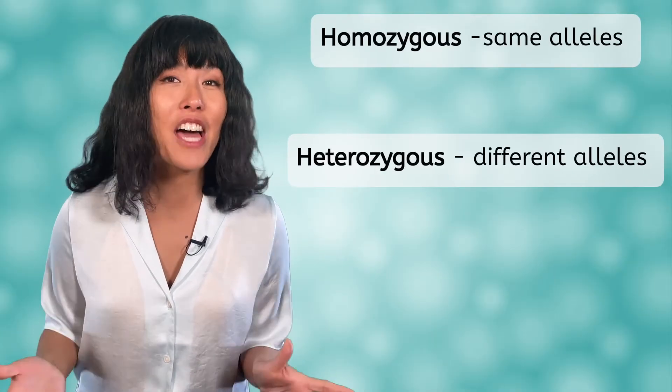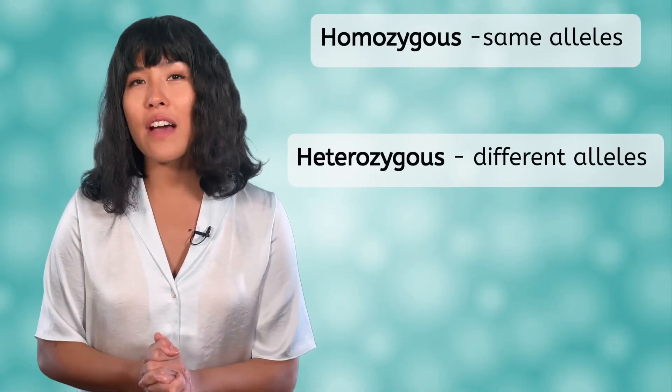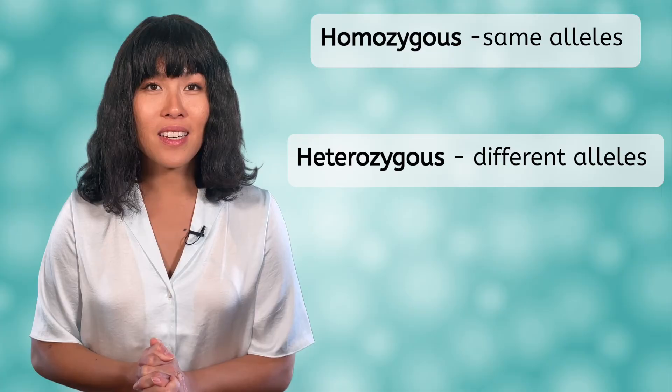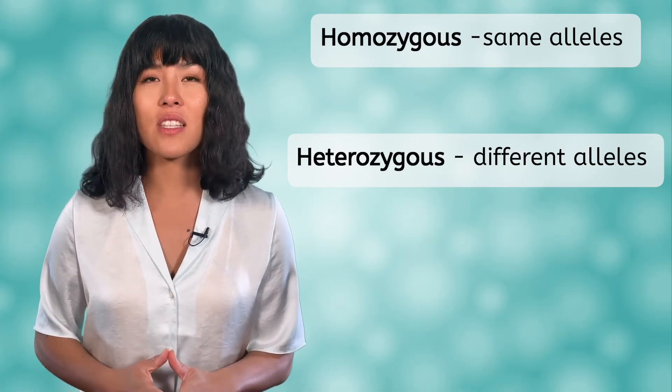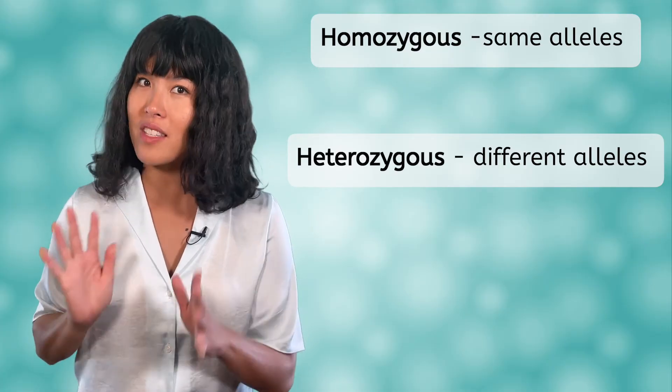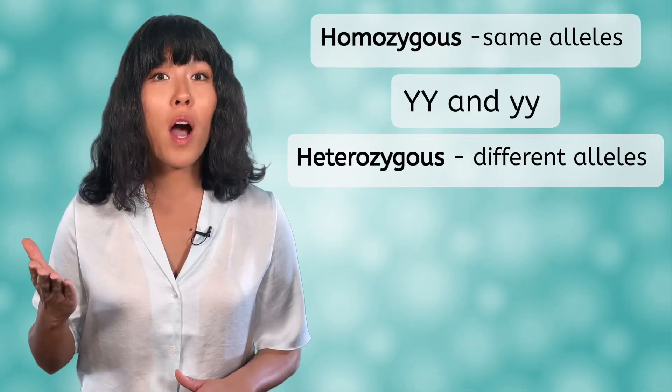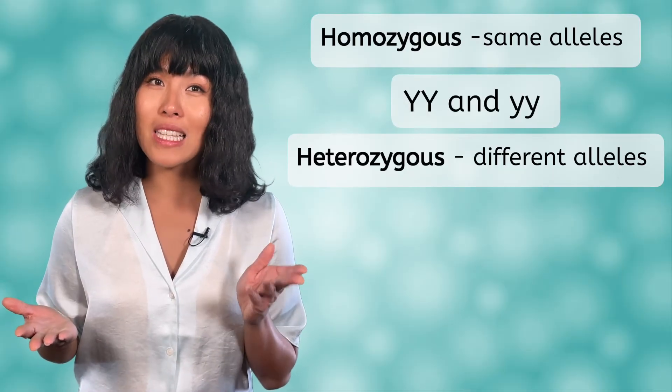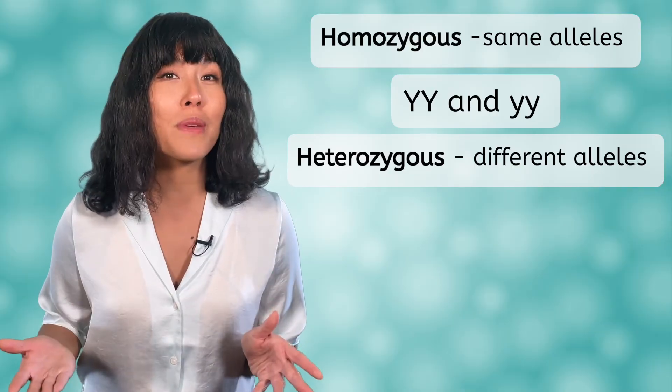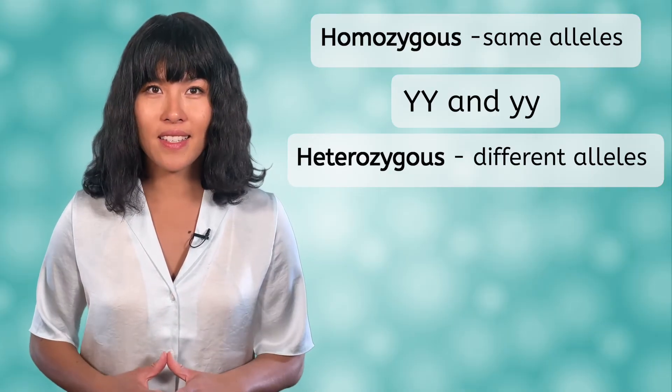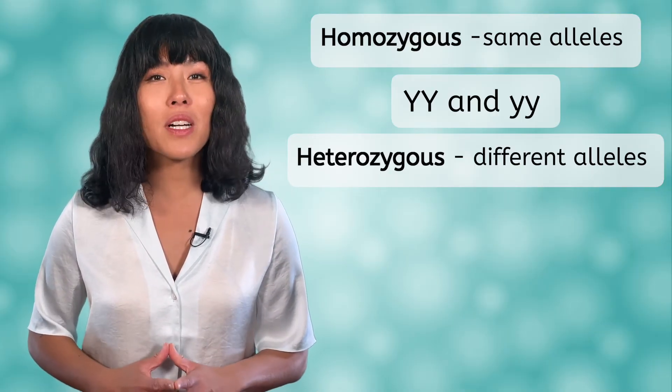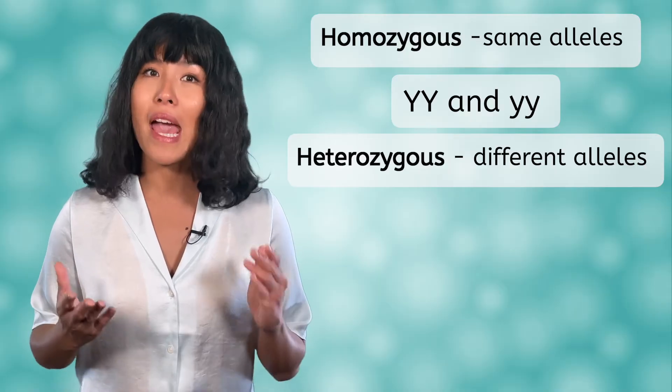Wow, did you follow all of that? I've got just a couple more new words for you. Homozygous and heterozygous. These words have to do with the genotypes. A homozygous genotype consists of two alleles that are the same. So our big Y, big Y genotype and little y, little y genotype would both be considered homozygous. This indicates that the same allele was inherited from mom and dad.